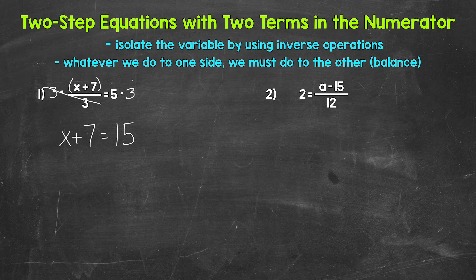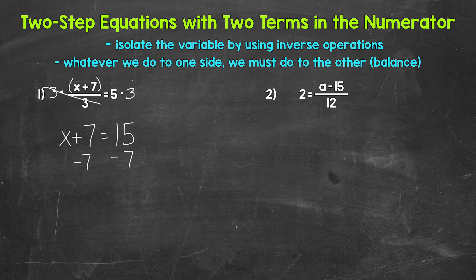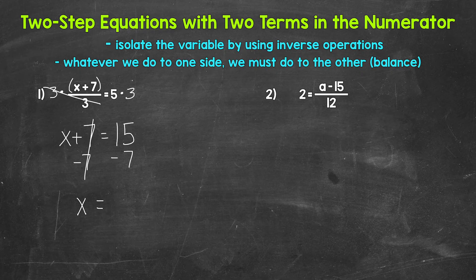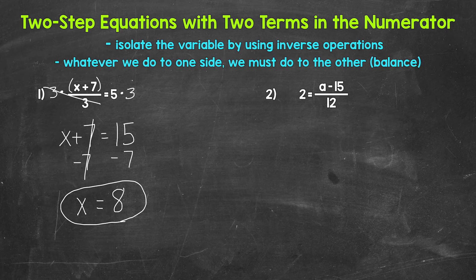Now we have x plus seven on the left side, and on the right side five times three gives us 15. So x plus seven equals 15. We are adding seven to x, so we need to undo that addition. The inverse of addition is subtraction, so let's subtract seven from both sides. The sevens cancel each other out, and x is now isolated: x equals 15 minus seven, which gives us eight.